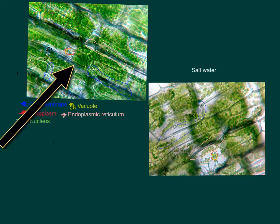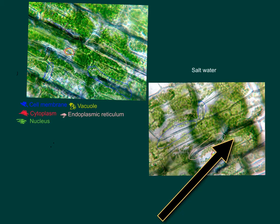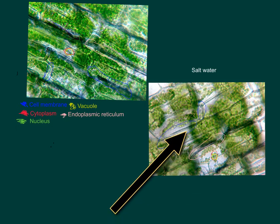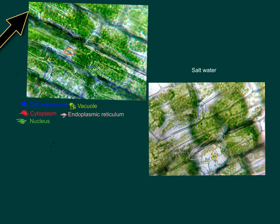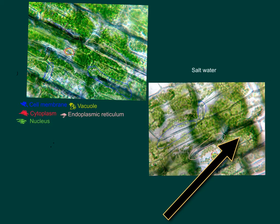We have the nucleus. This is generally the easiest structure to see in the cell. The nucleus directs the cell's activities. It contains chromosomes — structures made of genes that enable the cell to grow and reproduce. The nucleus is surrounded by a nuclear membrane, which controls the entry and exit of substances in the nucleus.